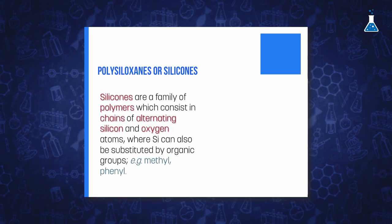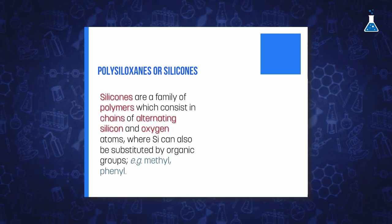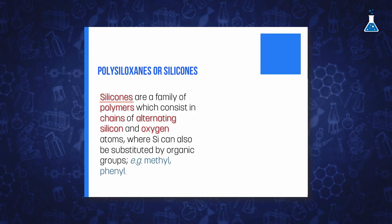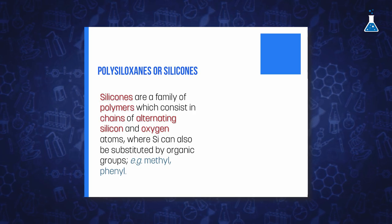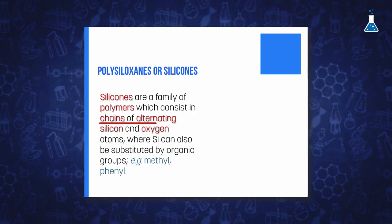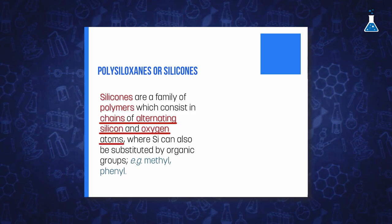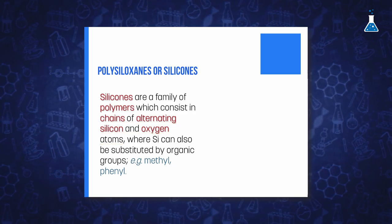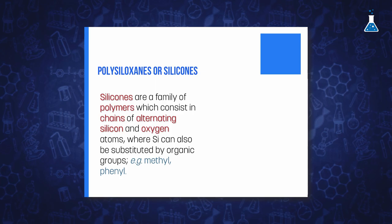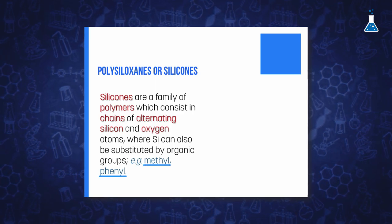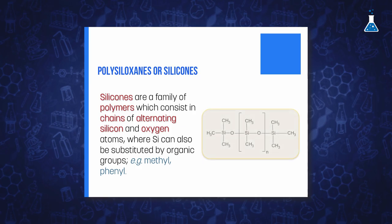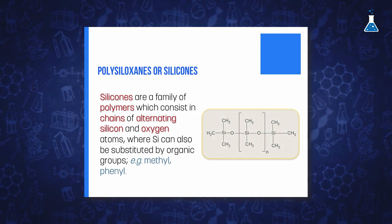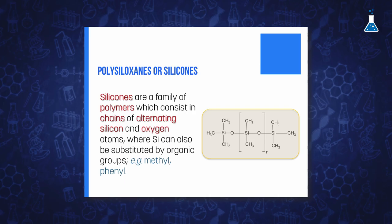For finishing this video, we would like to comment on some aspects of both types of compounds of silicon with high relevance. Polysiloxanes, commonly called silicones, are a very extensive family of polymers which consist of chains or networks of alternating silicon and oxygen atoms, where the silicon atoms can also be substituted by organic groups such as methyl groups, phenyl, and so on. The structure of the simple silicone is represented in the following figure, where the number of repeating units n is very large.